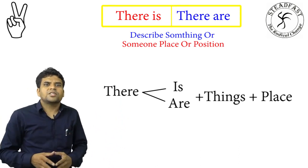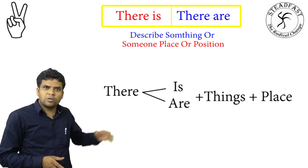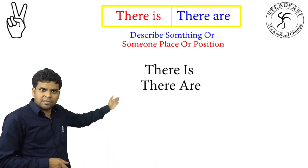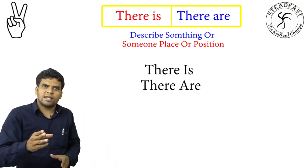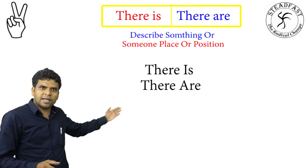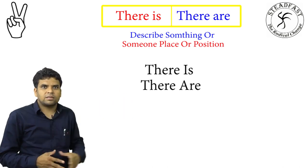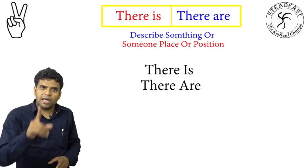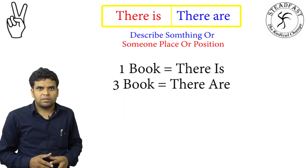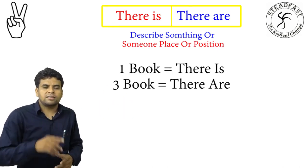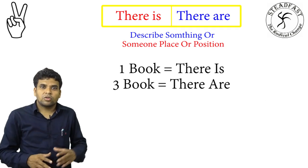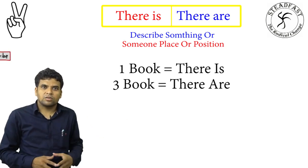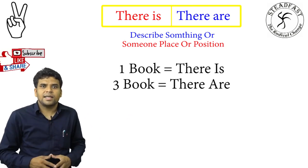If a word is one thing, we use 'there is'. If a word refers to many things, we use 'there are'. For example, if there are three books, we use 'there are' because three is plural.